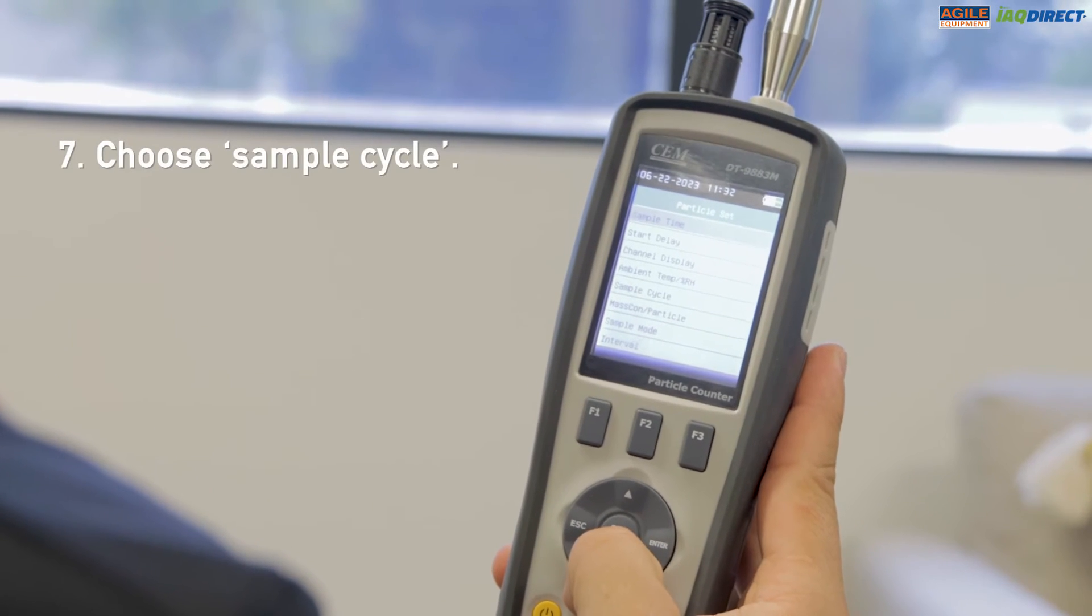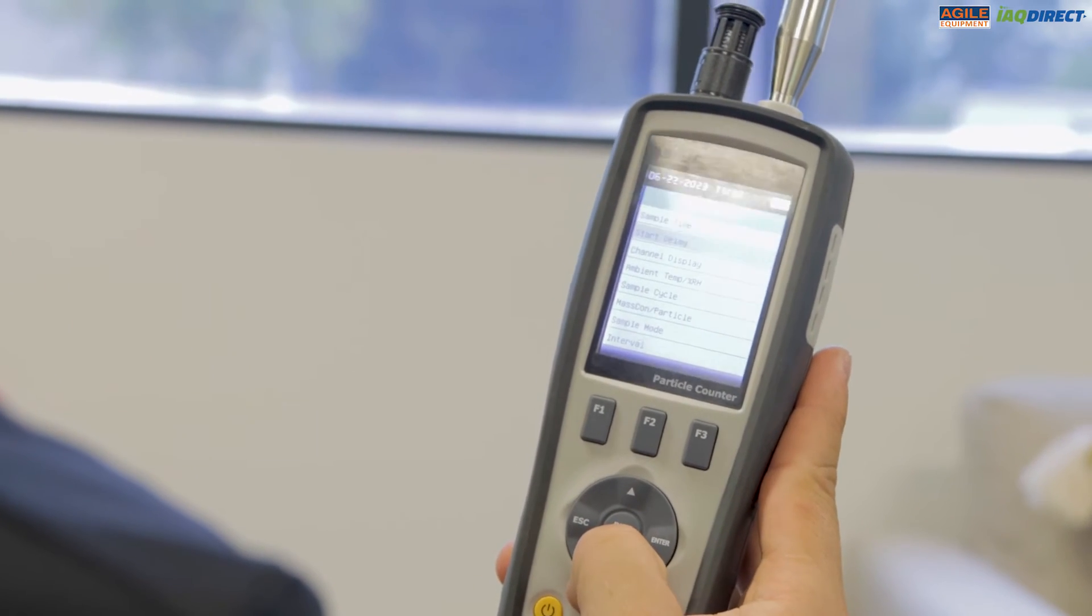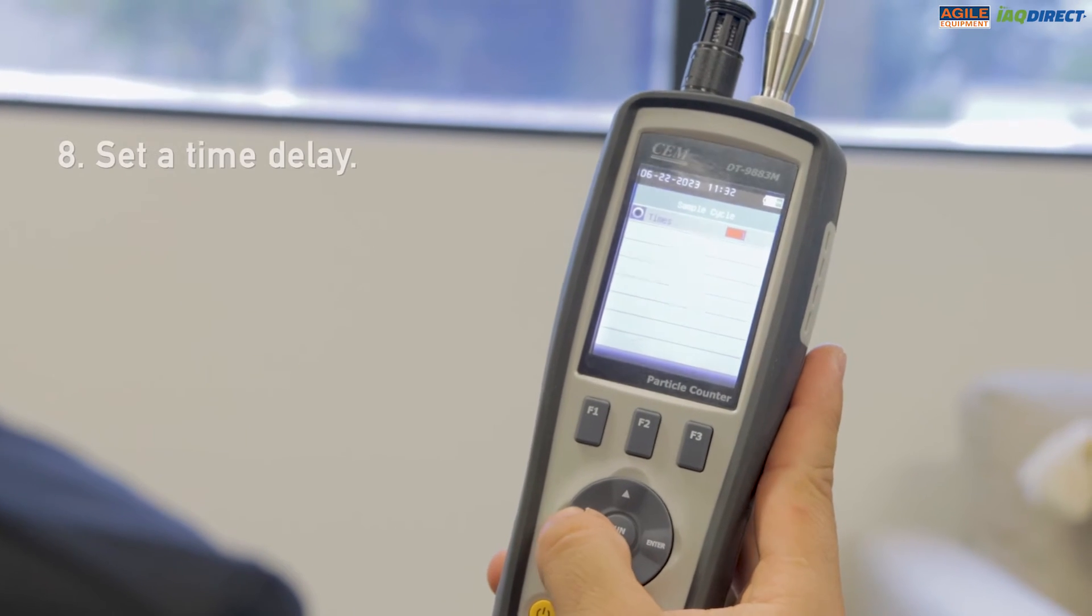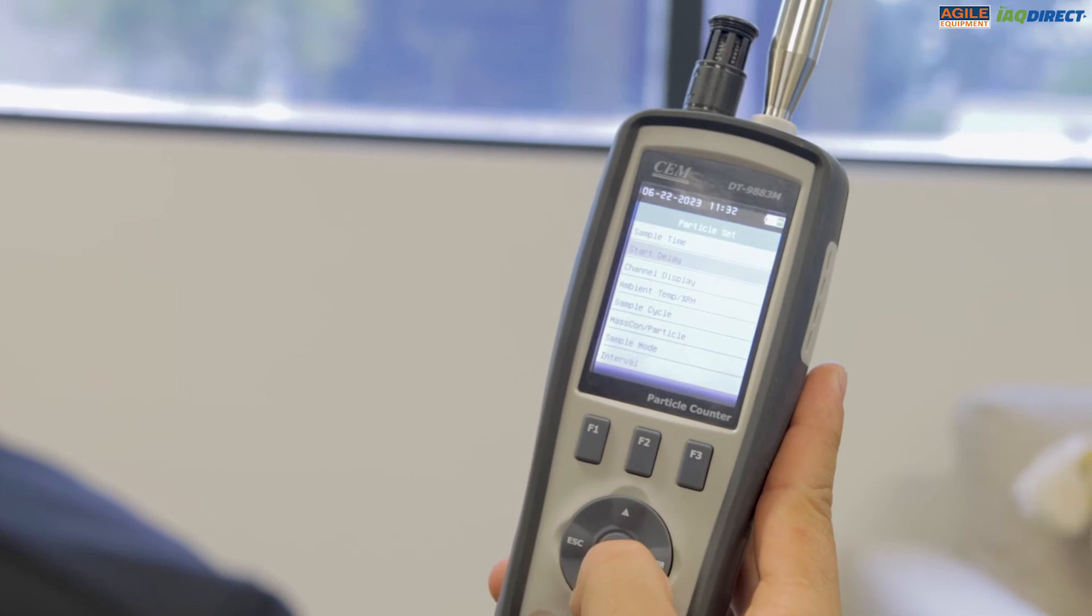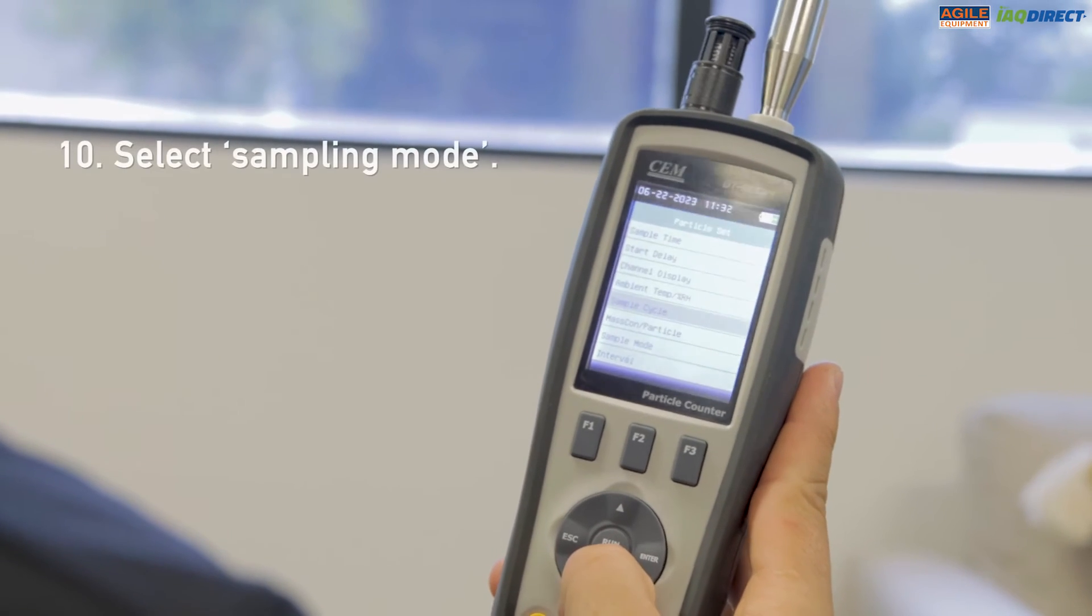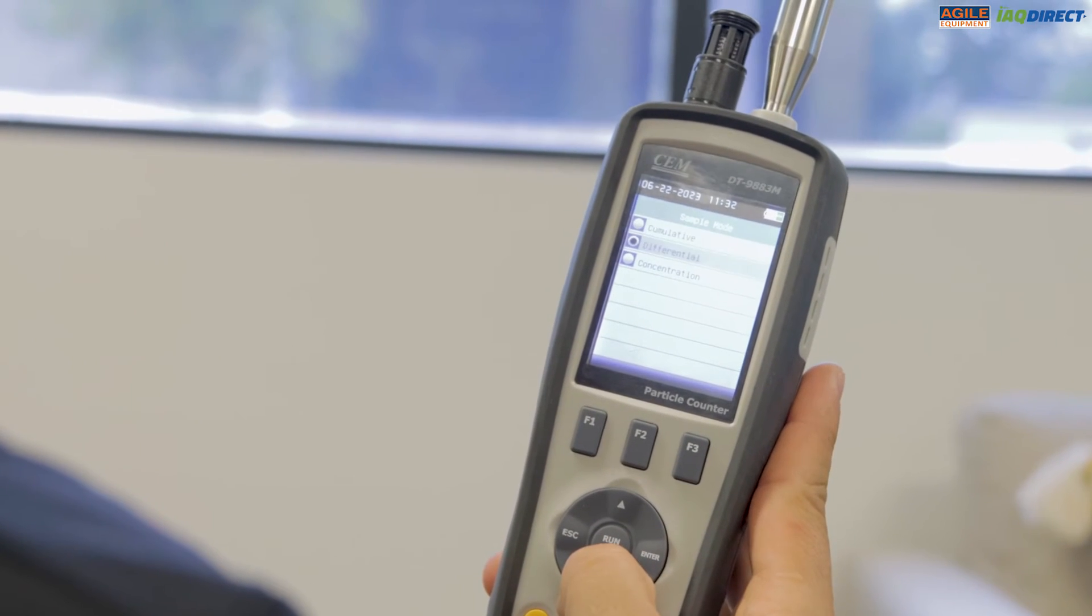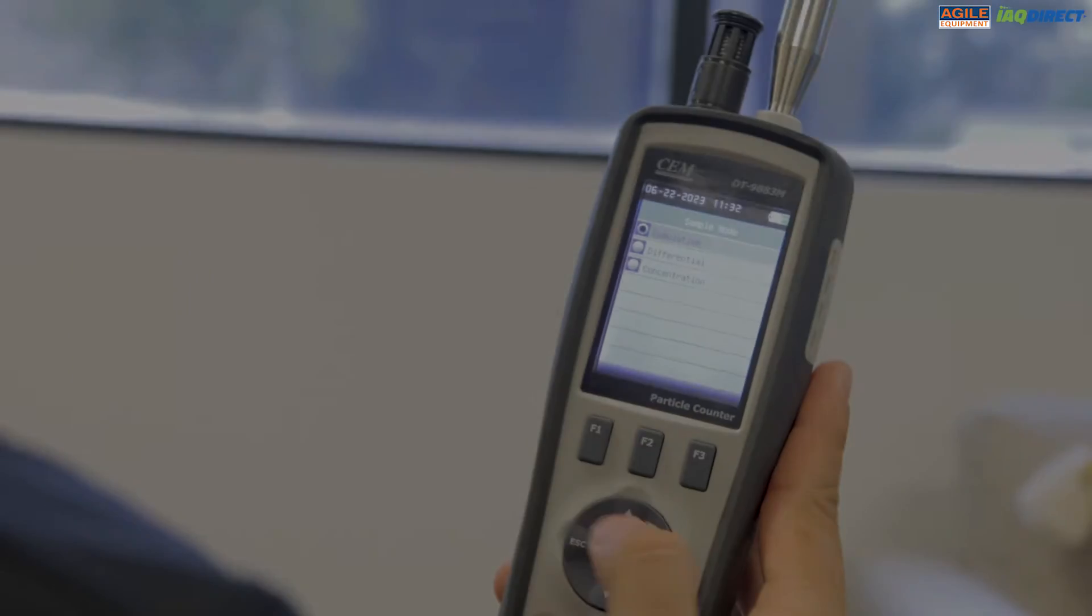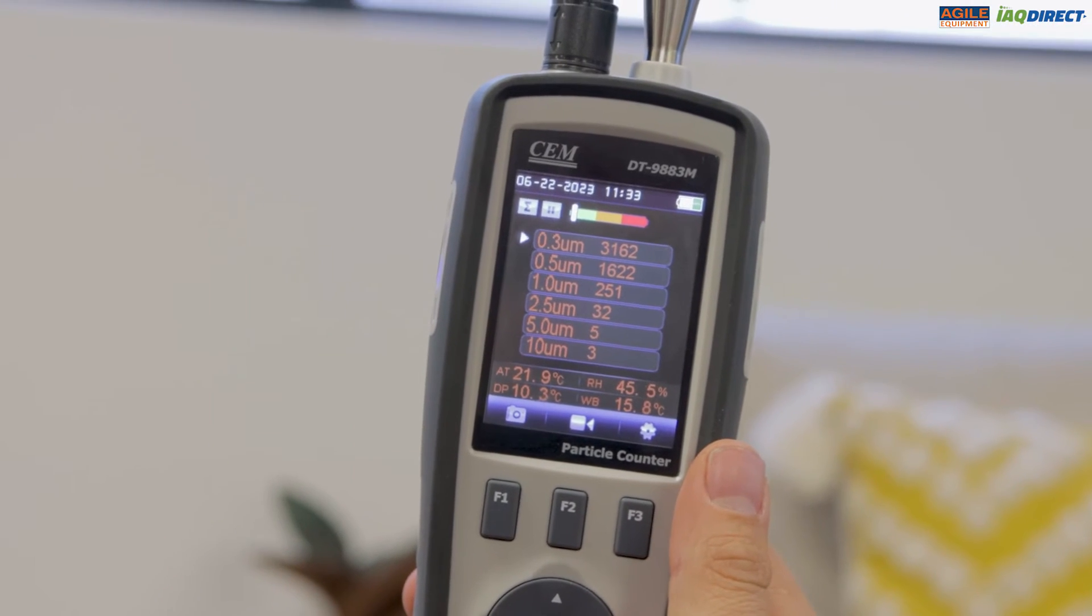Back in the settings menu, you can set how many times you can sample with the sample cycle option. You can also set a time delay or choose which channels to display. For your preference, you may also select three different sampling modes: Cumulative, Differential and Concentration.